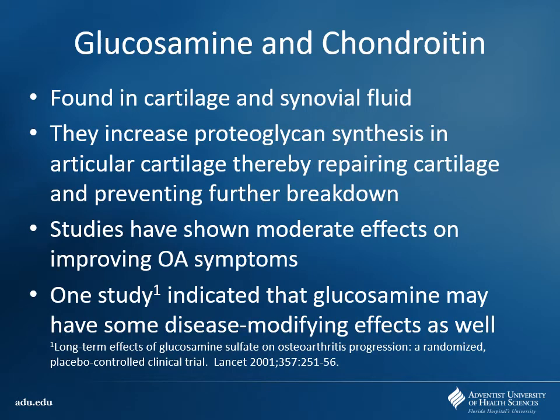Other things we could use include glucosamine and chondroitin — you've probably seen these in pharmacies. These are natural products found in cartilage and synovial fluid, thought to increase glycogen synthesis and help repair cartilage being degraded in osteoarthritis. This is purely for osteoarthritis. It has shown some moderate effect in improving OA symptoms, but it's not going to completely cure them — it's a good adjuvant to help repair cartilage, but won't fix the baseline problem.